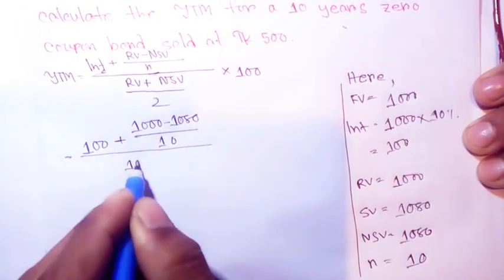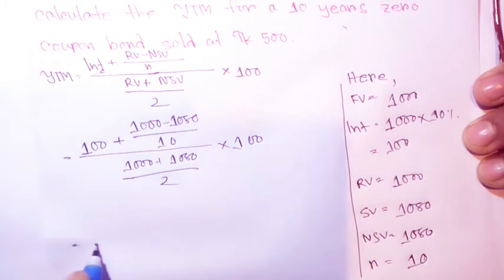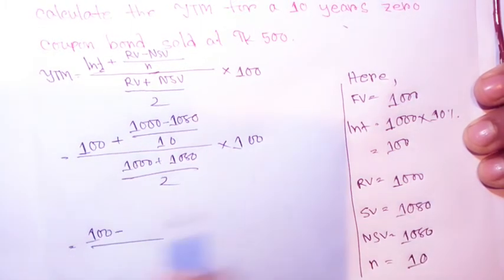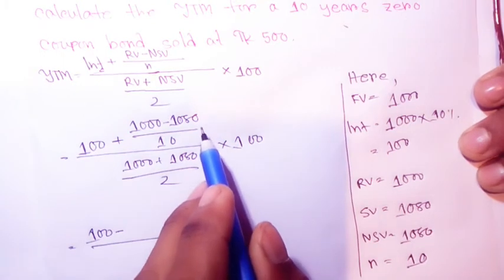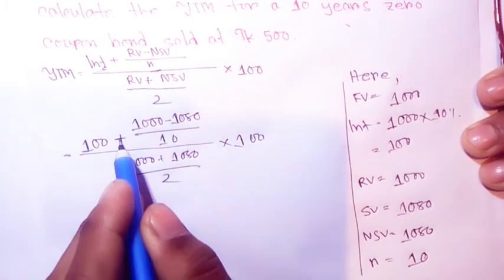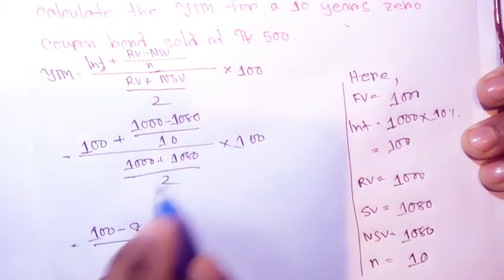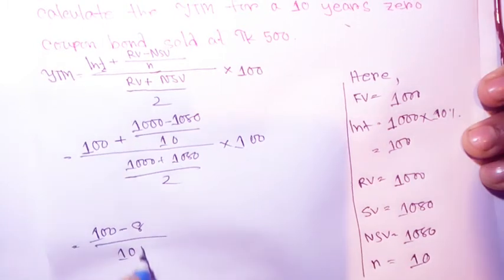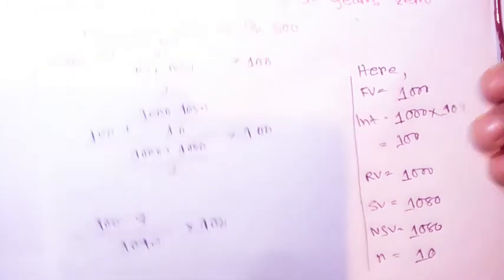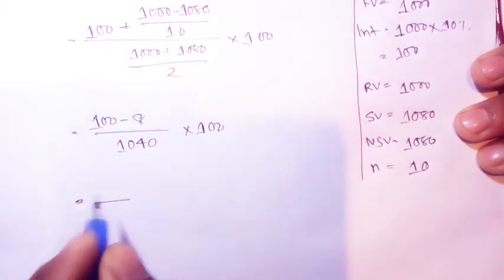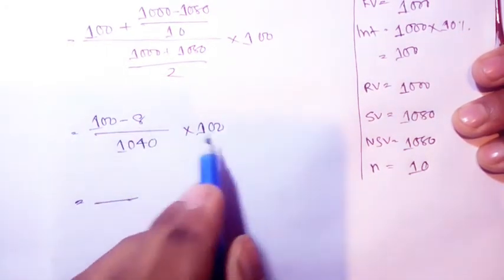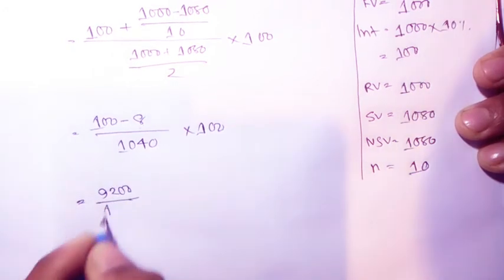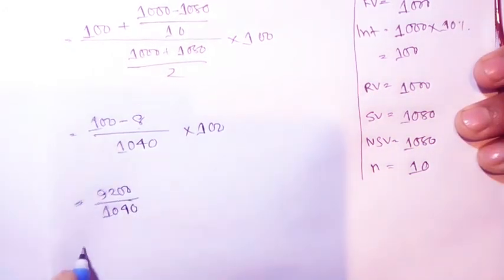So we have: 100 plus (1000 minus 880) divided by 10, then divided by (1000 plus 880) by 2, times 100. That gives us 100 plus 120 divided by 10 equals 100 plus 12, which is 112. Then 1880 by 2 equals 940.